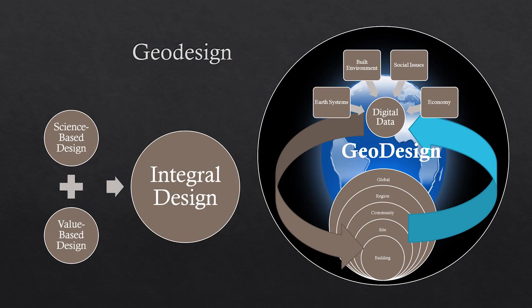Furthermore, geodesign allows community-based researchers a digital opportunity to tie the environment, economy, and social equity together by providing conceptual models linked to physical place for decision-makers. Modern geodesign allows researchers, planners, scientists, and designers a set of digital tools that can facilitate the complex integration of our built environment, earth systems, as well as social and economic issues. It can be used at all scales, from the building and site level to community, regional, all the way up to global.